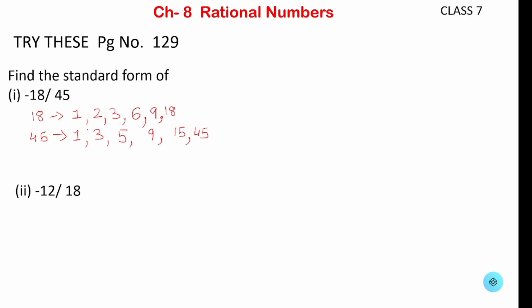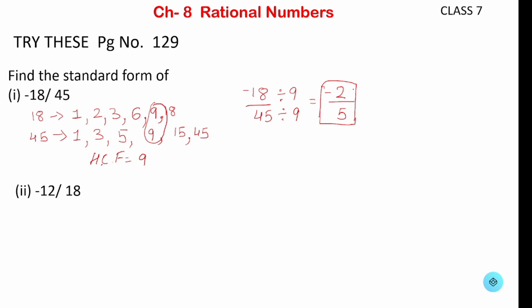Now from these factors we find the highest common factor. The common factors of 18 and 45 are 1, 3, and 9, so the HCF is 9. We divide our fraction minus 18 upon 45 by 9 — both numerator and denominator. Minus 18 divided by 9 gives minus 2, and 45 divided by 9 gives 5. So we get minus 2 upon 5. The numerator and denominator have no common factor other than 1, so this is the standard form.